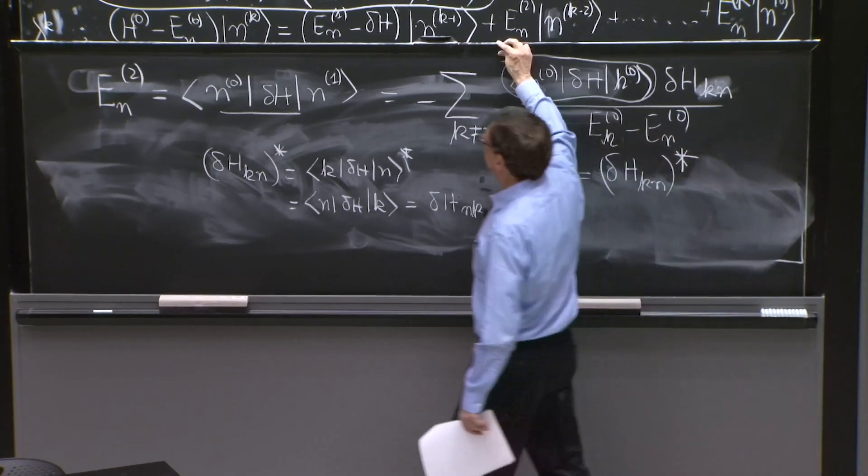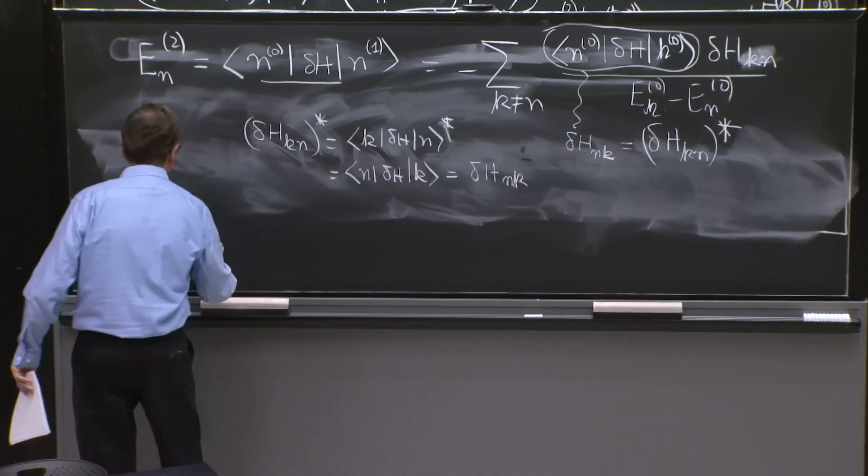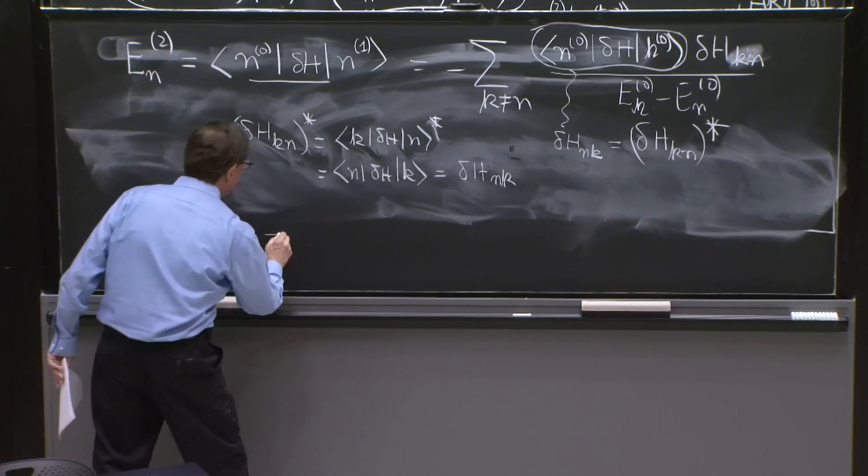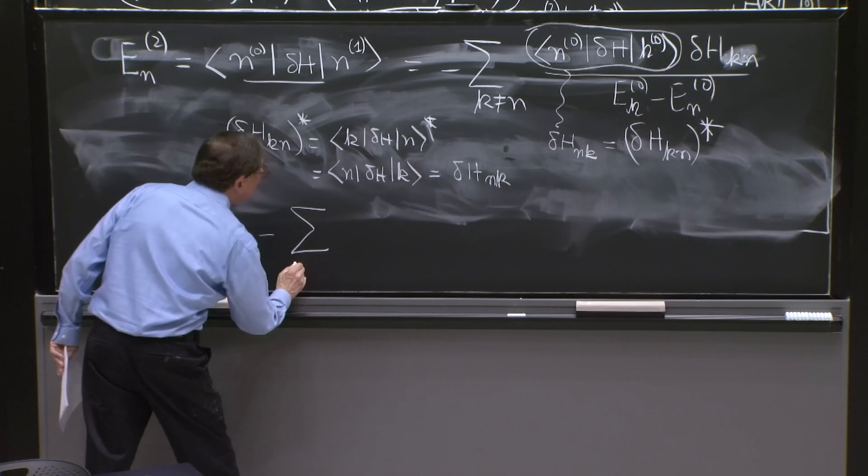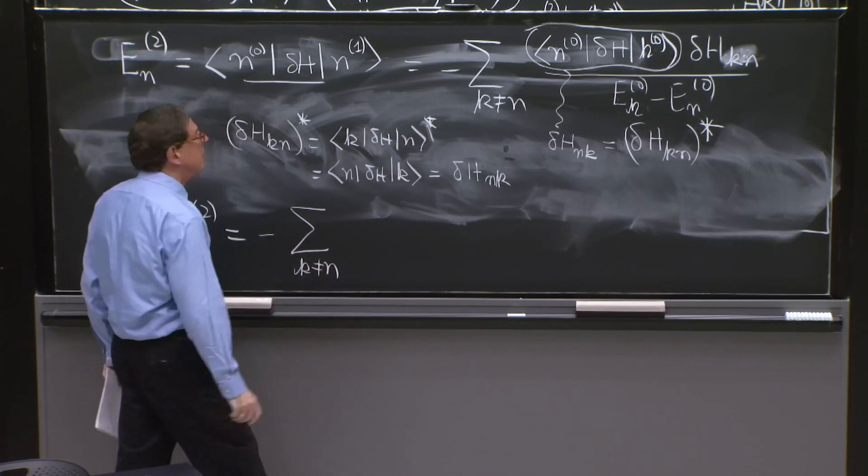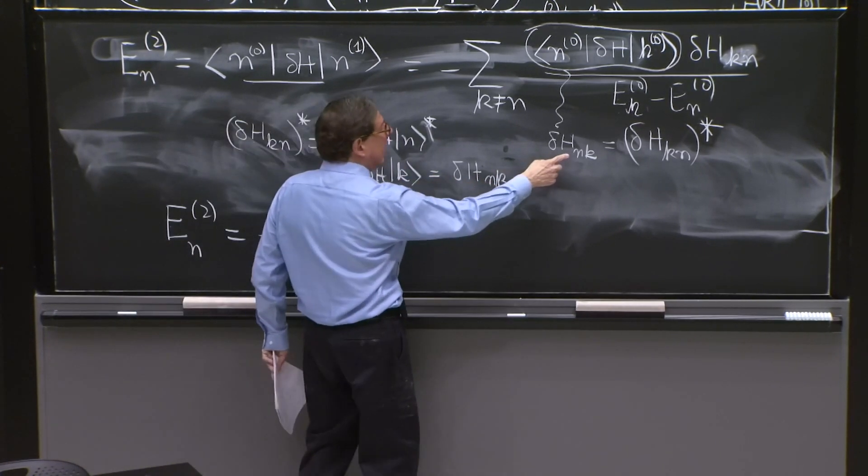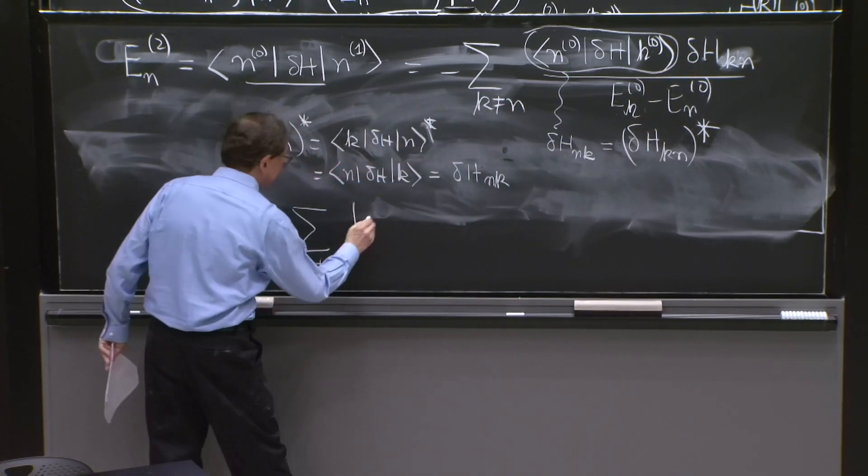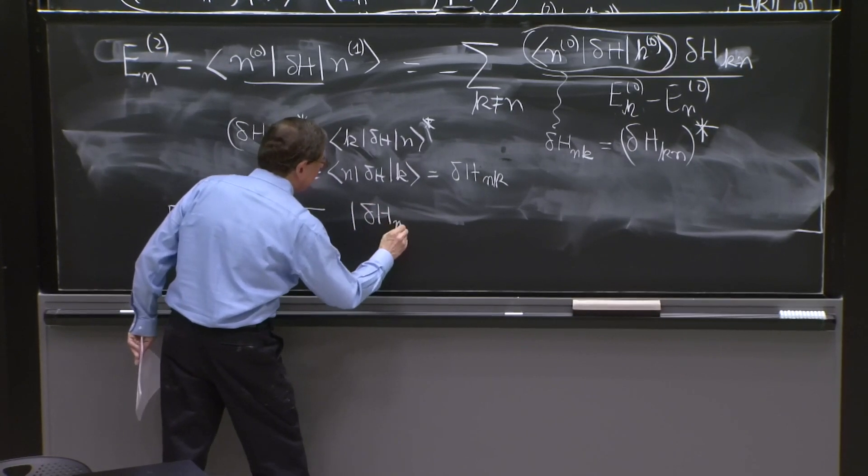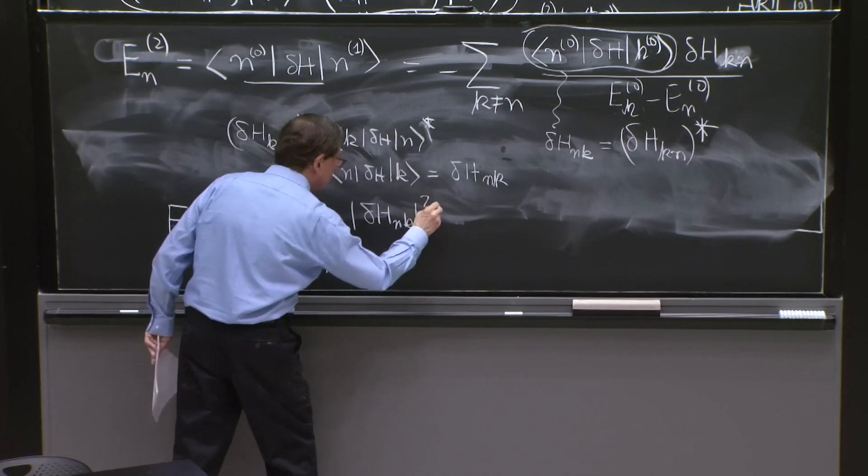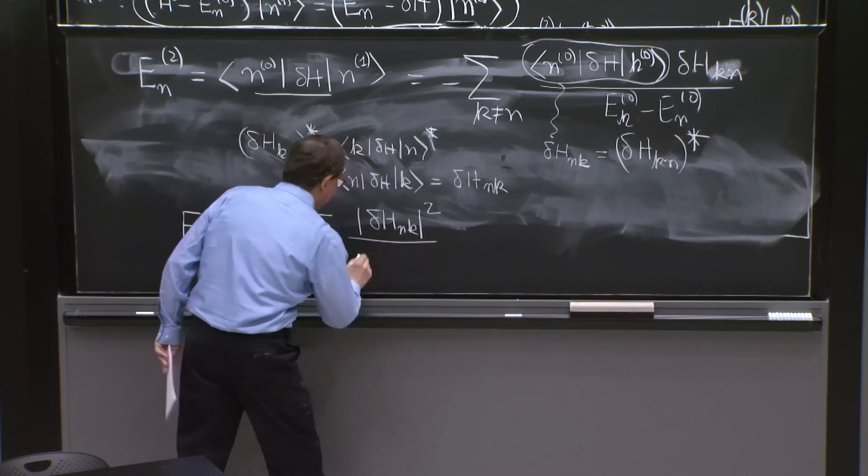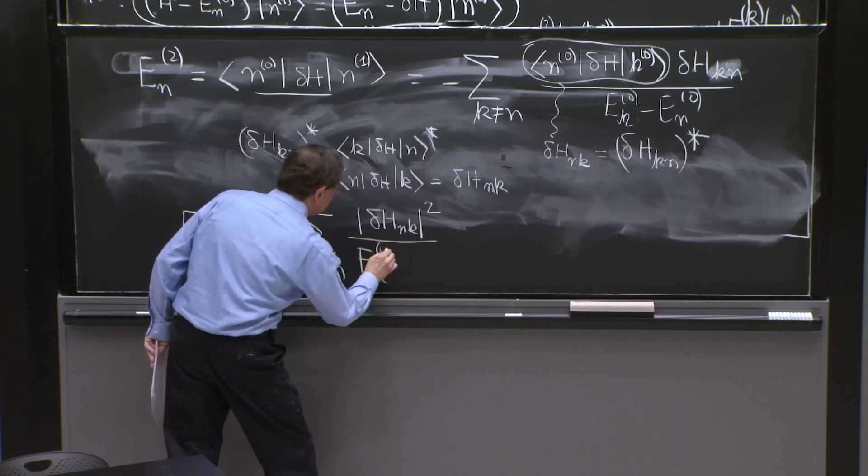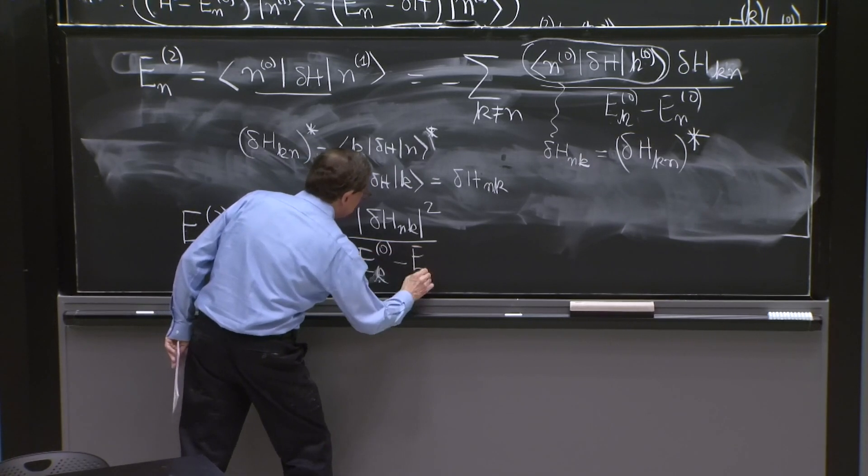And therefore, the second-order energy correction has a nice formula. E_n2 is equal to minus the sum over k different from n: delta H_nk, which is the star of that, times this one—so you get delta H_nk absolute value squared, divided by E_n—E_kn—E_k0 minus E_n0.